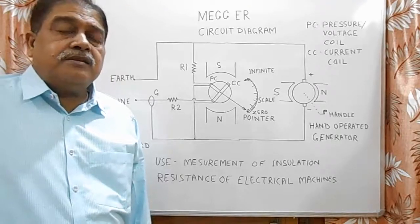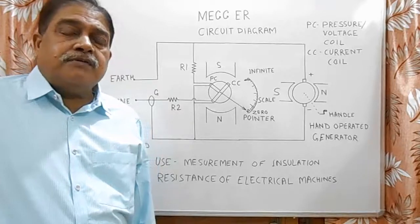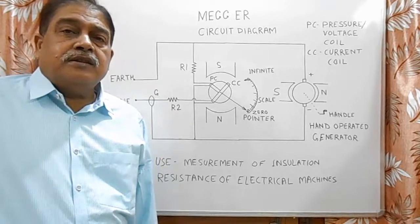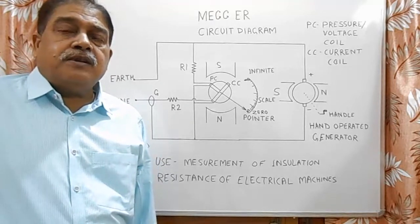For any motor, Megger value must be its supply rated voltage multiplied by 1000. That is for example, 400V motors, it must be 400 multiplied by 1000.